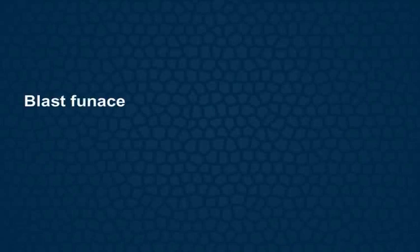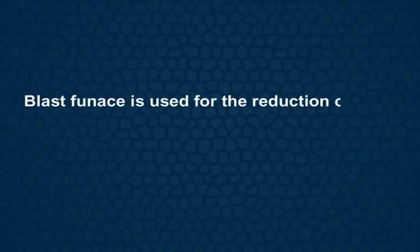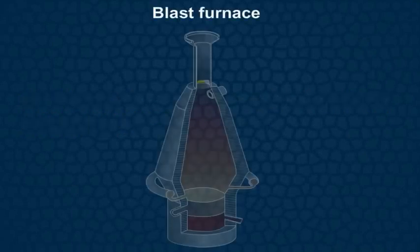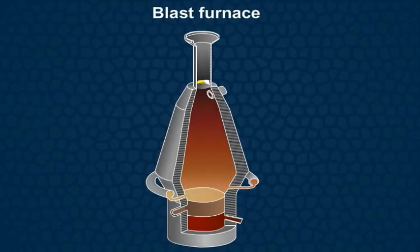Blast furnace is used for the reduction of iron oxide at different temperatures. Let us see how the blast furnace works. First of all, hot air is blown from the bottom of the furnace.